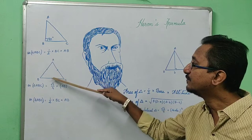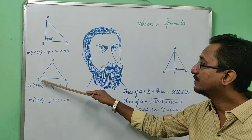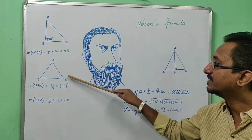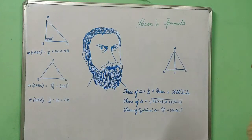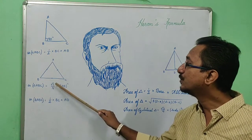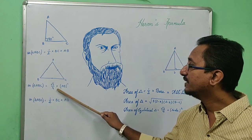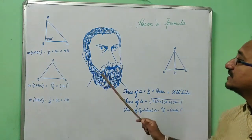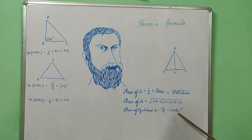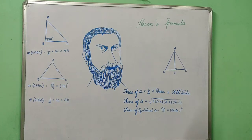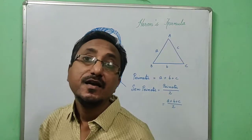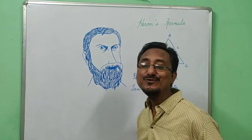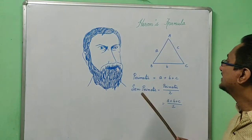Next is the equilateral triangle. An equilateral triangle has all three sides equal, that is AB equals BC equals CA. The formula for the area of an equilateral triangle is root over 3 by 4 into side squared, that is (√3/4) × a².